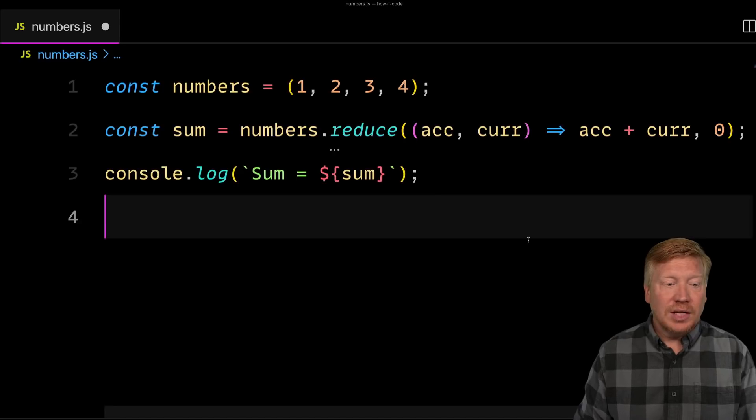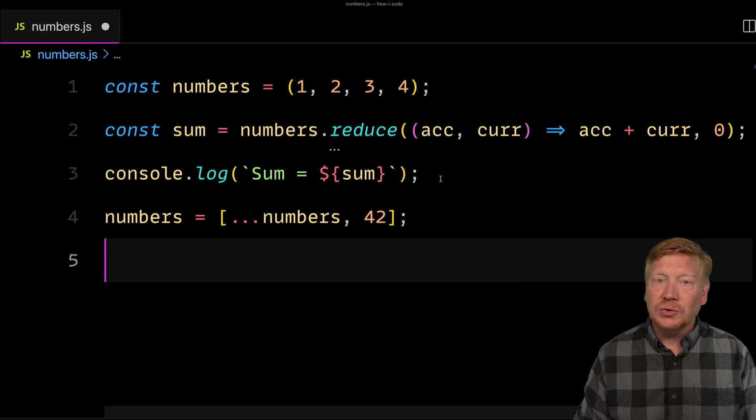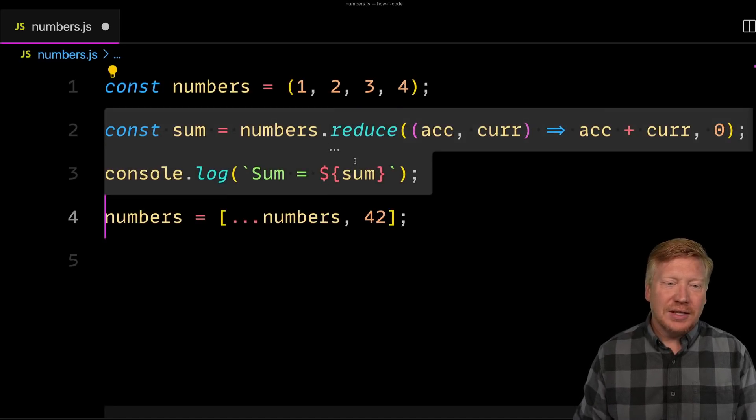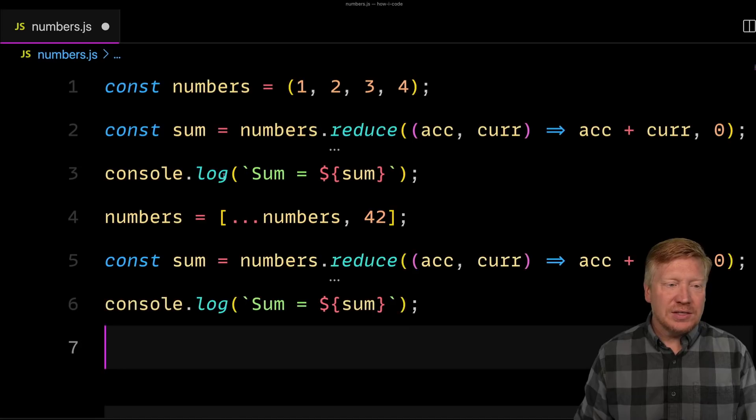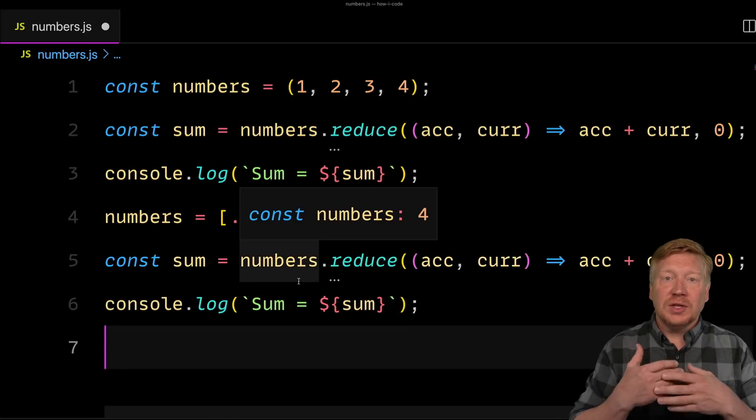And then I'm going to print that out. Then I'm going to go add on 42 onto that list of numbers. And then I'm going to copy and paste this sum line. And that's going to do that sum again.